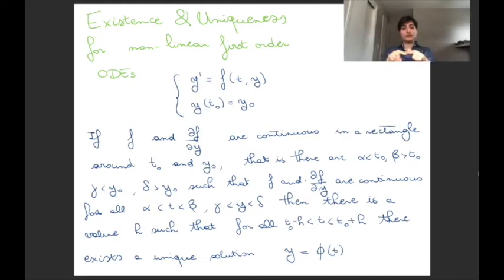You want that in this rectangle f and df/dy are continuous for all t and y. If that is true, then there is this value h such that for all t between t0 minus h and t0 plus h there exists a unique solution.